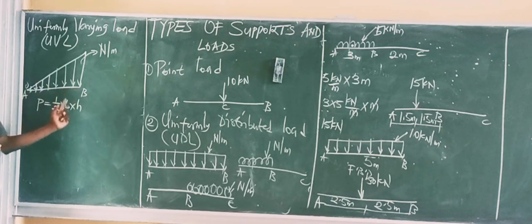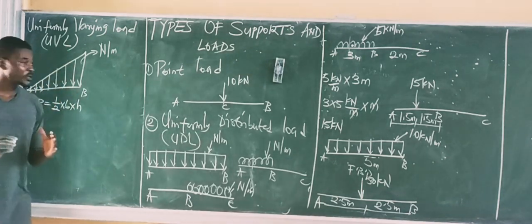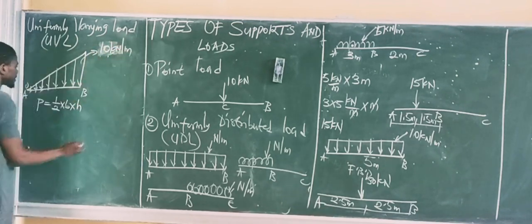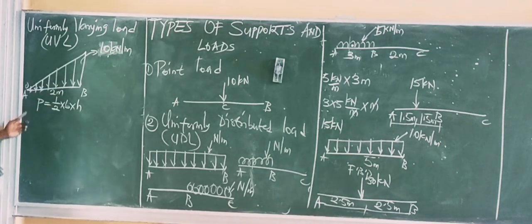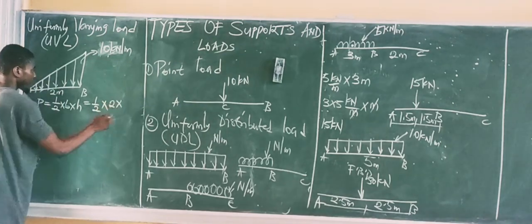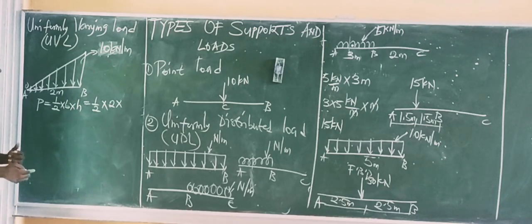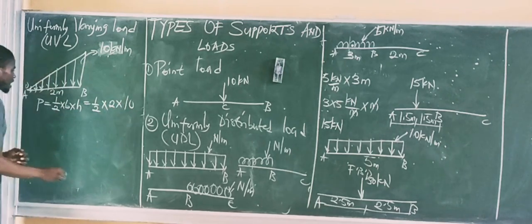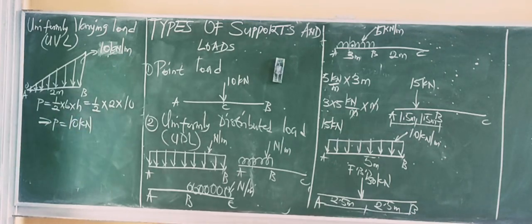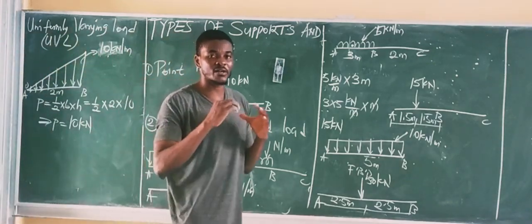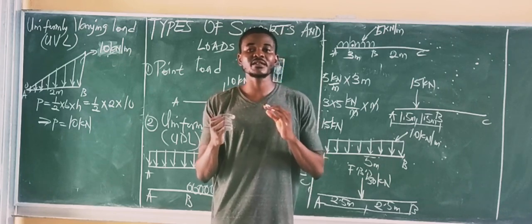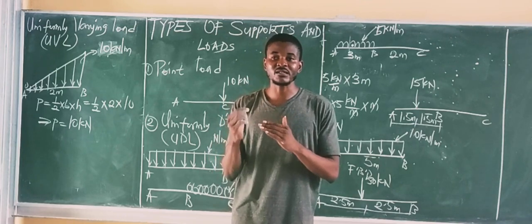The base is simply the length covered by the UVL, while the height is the maximum intensity of the UVL. For instance, if the maximum value of the UVL is 10 kN per meter and the length covered is 2 meters, then the point load = ½ × 2 × 10 = 10 kN. That is how you convert a UVL to a point load — take the area of the triangle: ½ × base × height, where the base is the length of the UVL and the height is the maximum intensity.